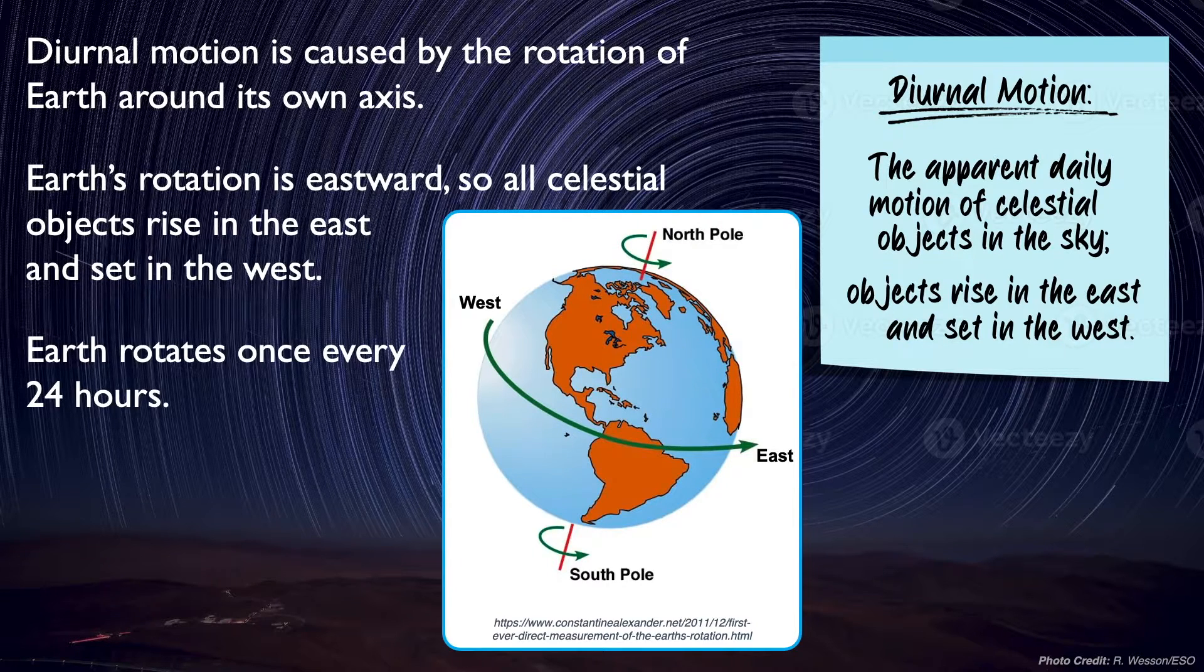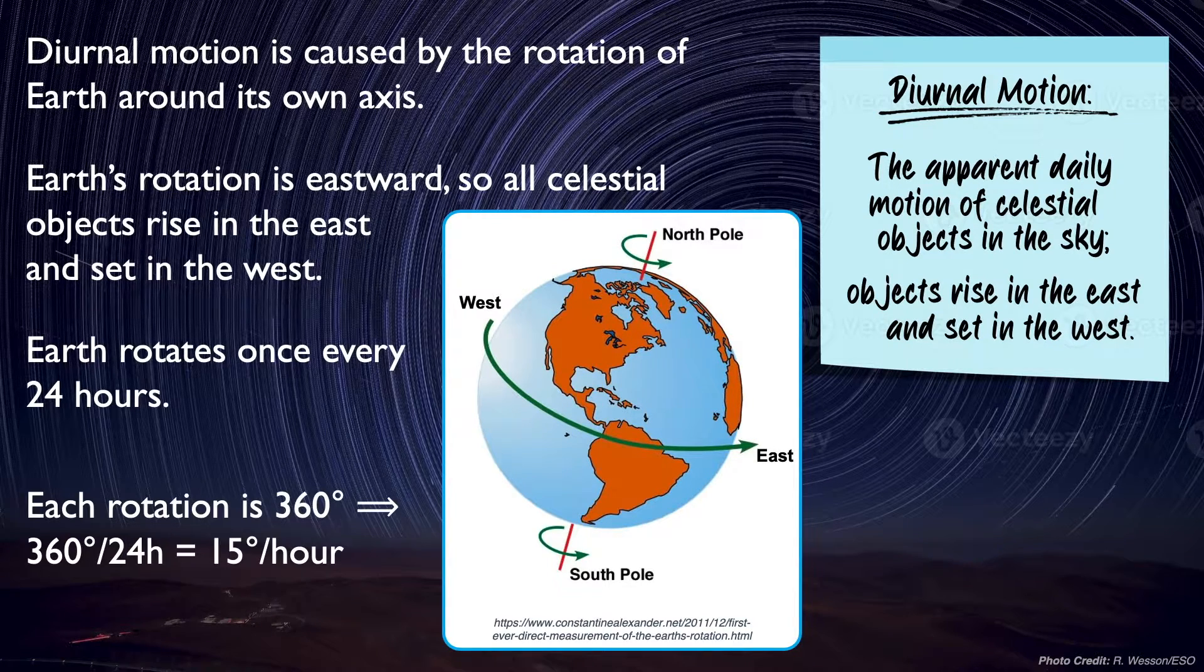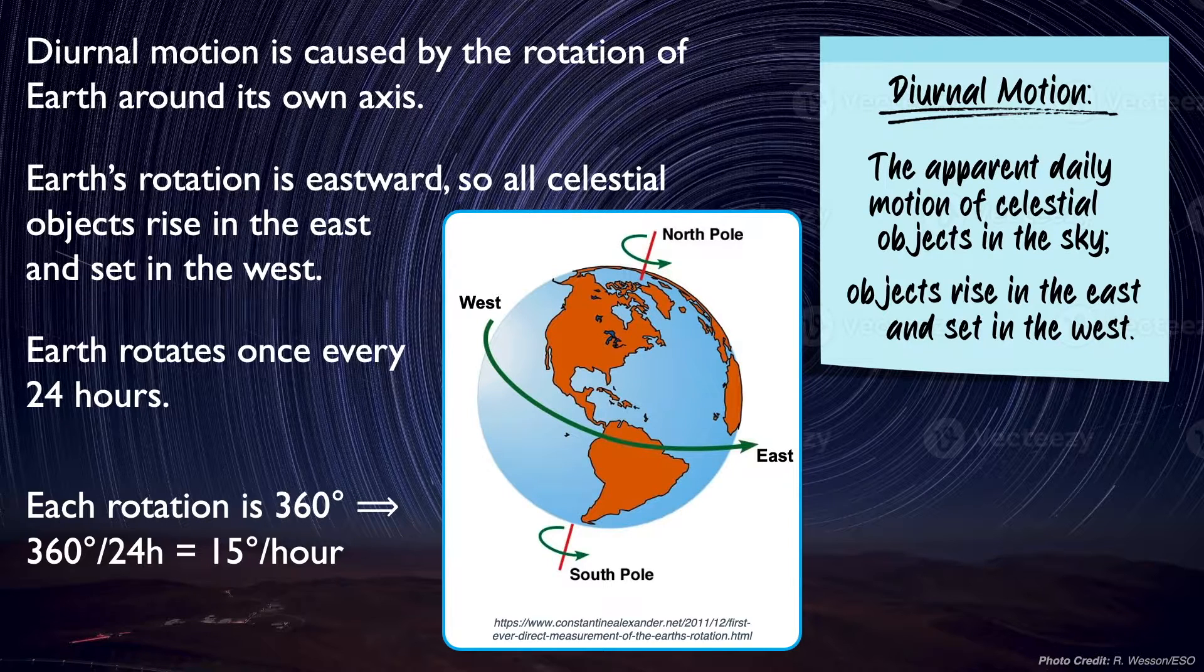Since Earth rotates once every 24 hours and each rotation is 360 degrees, we can say that Earth rotates 15 degrees per hour. In other words, the sky changes by 15 degrees as each hour passes.